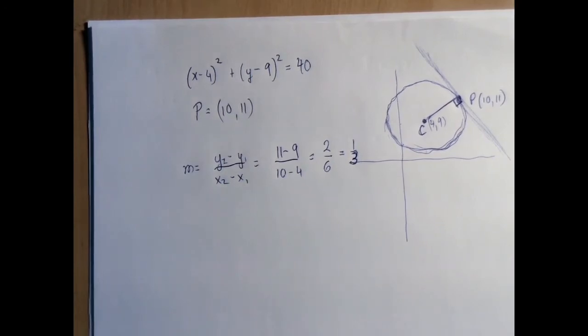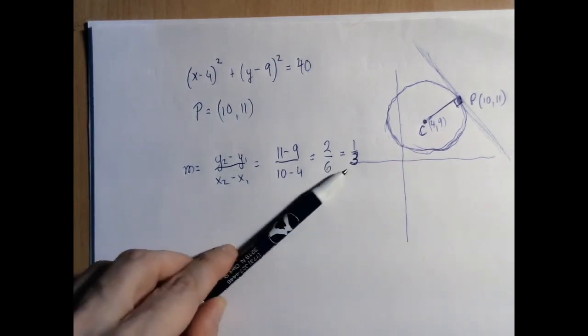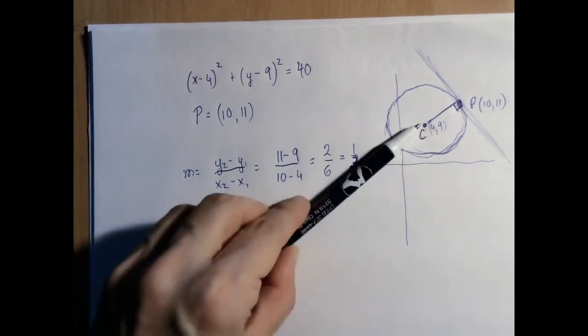When we compute the slope, the most dangerous spot is the sign of the slope. That's why it's good to have a picture, because the picture will protect us from that error. It does look reasonable that this slope should be 1 third.